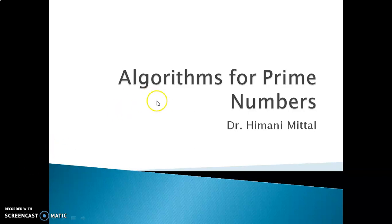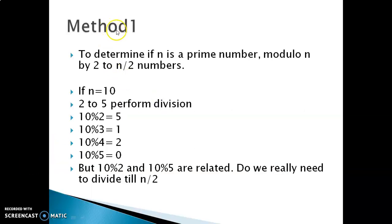The first method says that if you want to determine if n is a prime number, just modulo n by all the numbers from 2 to n/2. This is the regular method which we are using in our classrooms. In this method, suppose 10 is the number for which I want to find out if it is a prime or not, then from 2 to half of 10, that is 5, I have to perform the division.